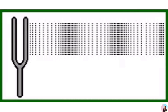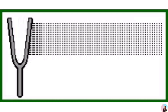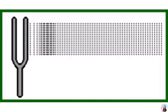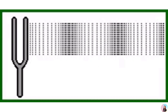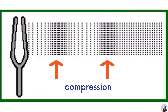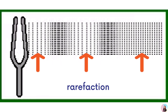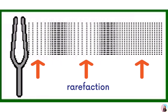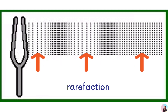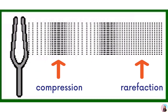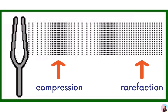This vibration from one molecule to the other helps sound to travel. The region where the particles are closer to one another is called the compression region, while the region where the particles are farther from one another is called the rarefaction region. Now that we've discussed how sound travels, let us now explain how we hear sound.